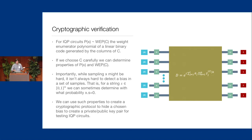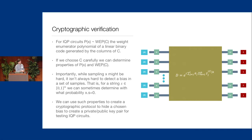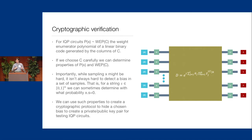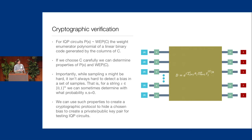IQP circuits can be encoded in terms of a binary matrix C which describes where the gates are. The output probability of a given sample depends on the weighted enumerator polynomial of this code. If you choose the matrix C carefully, you can determine certain properties of P(x). While you generally won't be able to compute P(x) for all arguments, with a carefully chosen family of codes you might be able to determine certain testable things about it. Importantly, while sampling X might be hard, it isn't always hard to detect a bias in a set of samples — you can sometimes determine with what probability output samples from your circuit are orthogonal to a given bit string S, which is dramatically easier than computing the output probability directly.